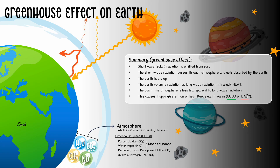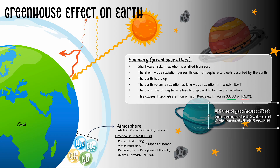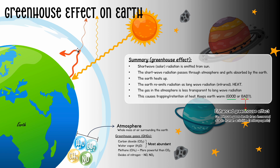Now, what's bad about it? The greenhouse effect is getting a negative connotation because of what humans are doing to it. Humans are causing what we call the enhanced greenhouse effect — we are amplifying this effect by influencing the concentration of certain greenhouse gases in the atmosphere. If we increase the abundance of certain greenhouse gases, we cause more heat to be retained, leading to various negative climate changes. That's going to lead to climate change, which we'll talk about more later in this video.